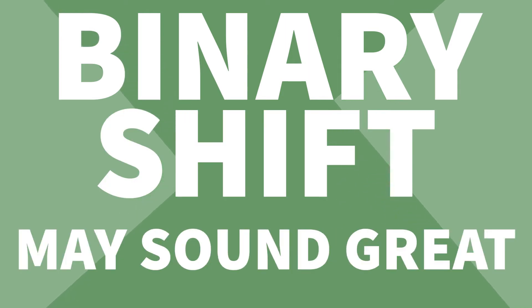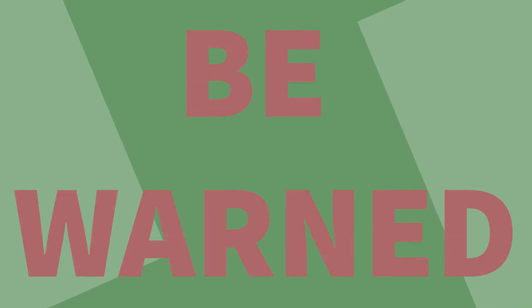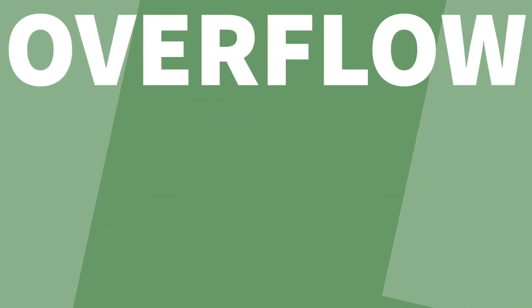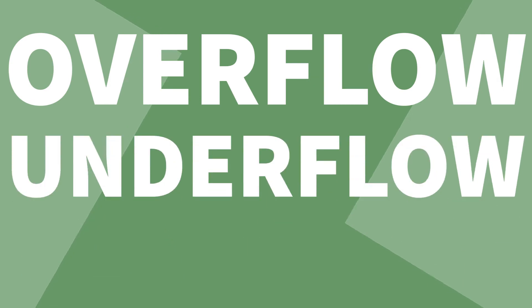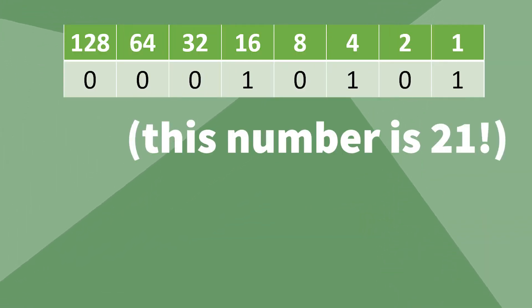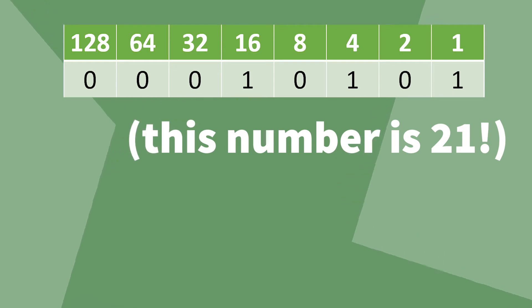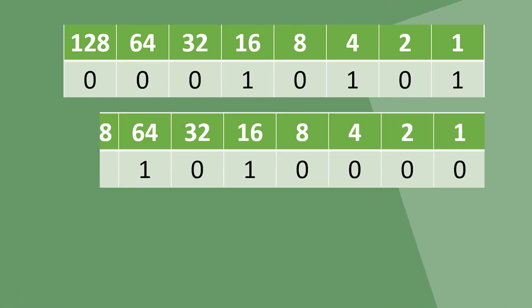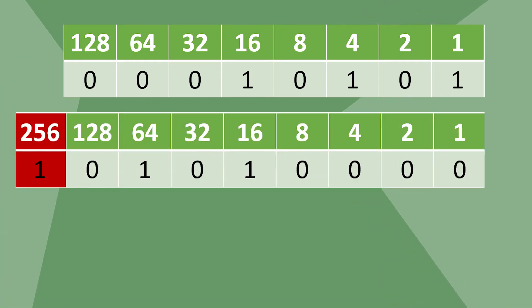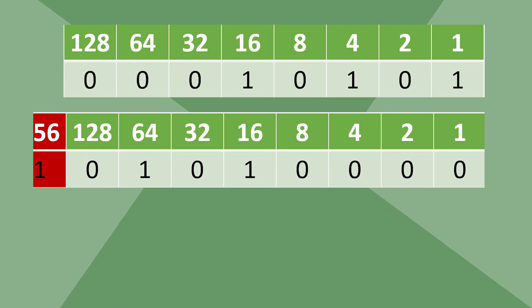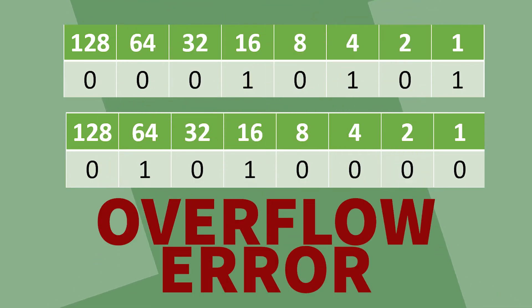Binary shift may sound great, but be warned — they can come with overflow or underflow errors. Working with 8 bits, if we take this number and perform a left shift of 4, we lose this bit as it goes beyond the 8 bits. This is an overflow error.